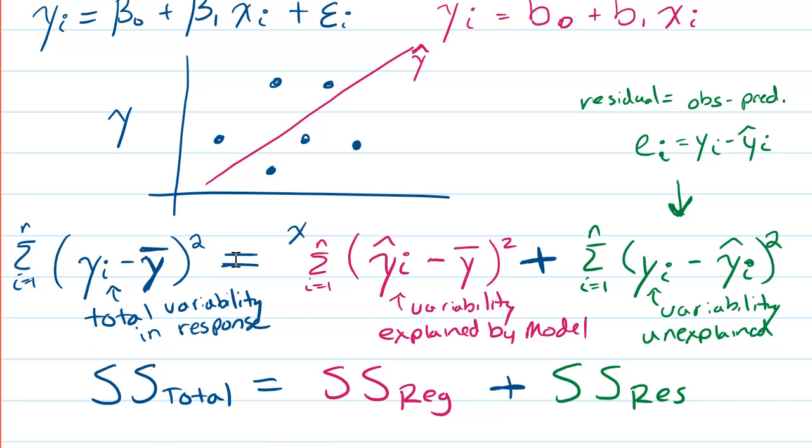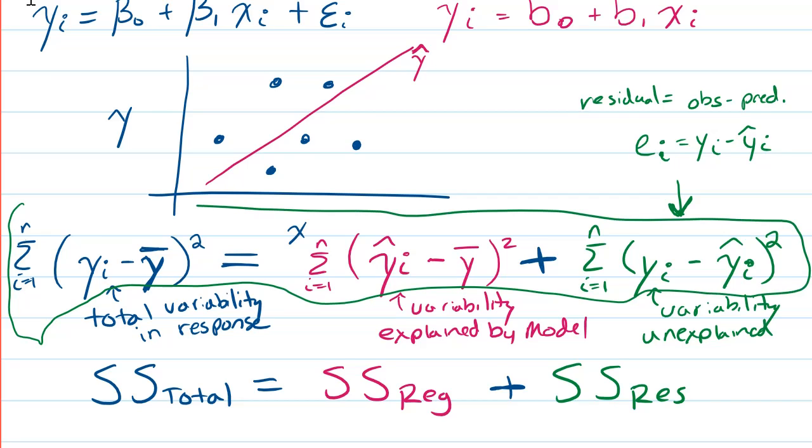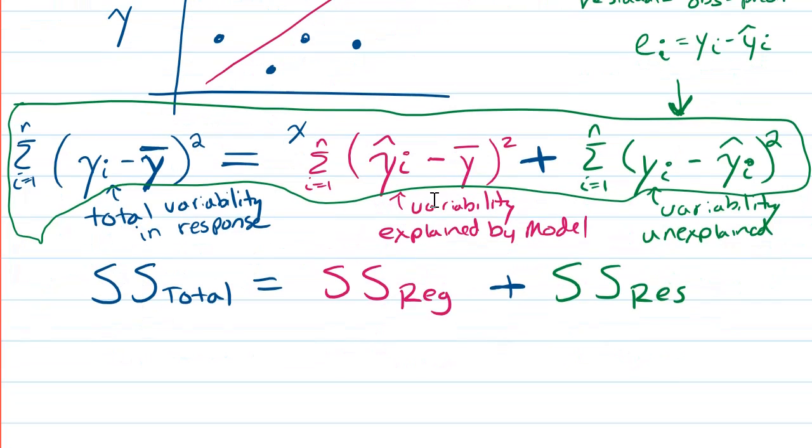And like I said in the next video, I'll explain this proof for why this equation here is true. There is some math that goes behind why this is true, and I'll do that in the next video. But for right now, what's important that you understand is that this variability can be partitioned into the total variability on the left-hand side of the equation, and the variability explained by the model plus the variability that's unexplained on the right-hand side of the equation.